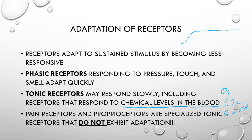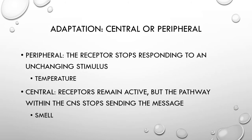There are a couple of exceptions to adaptation. Pain receptors — we don't ever want to forget about pain, so they will always have action potentials if a stimulus is present. Proprioceptors are also exceptions — we don't want them forgetting where our arm or leg is as we're walking. Peripheral adaptation is where the actual receptor stops firing off. In a room with constant temperature, that receptor will change its output and stop generating action potentials until the temperature changes. If the temperature then stays at that new level, they will once again adapt.